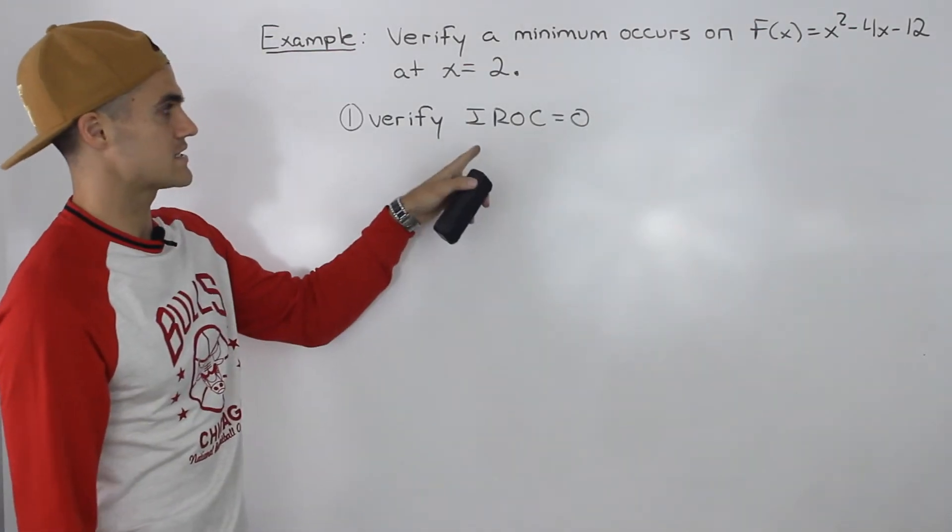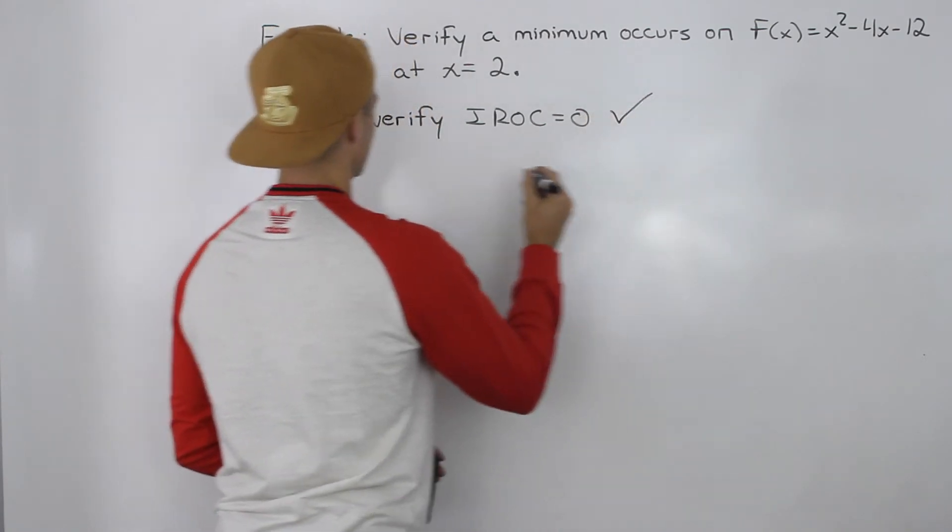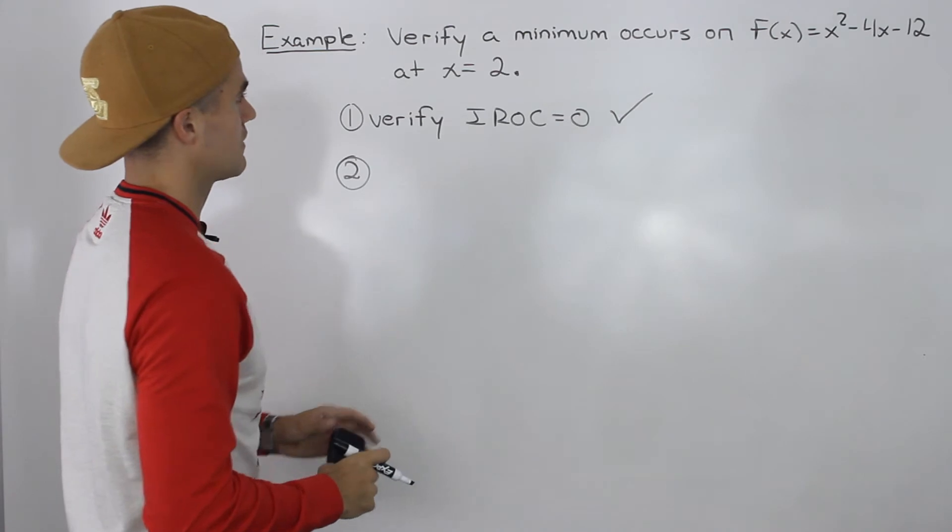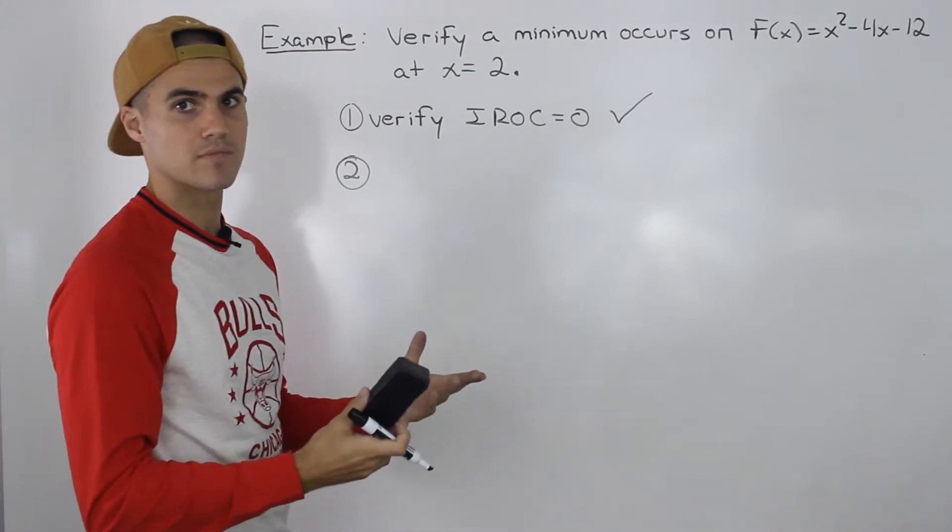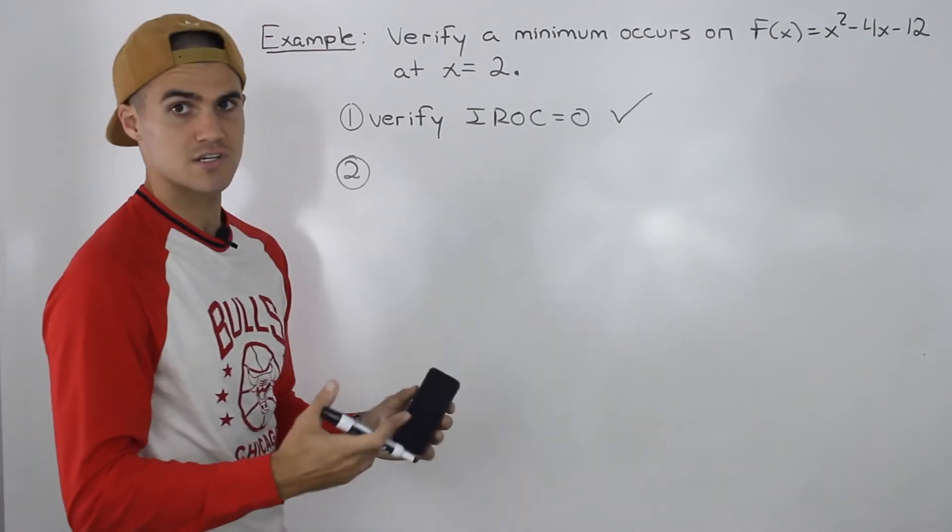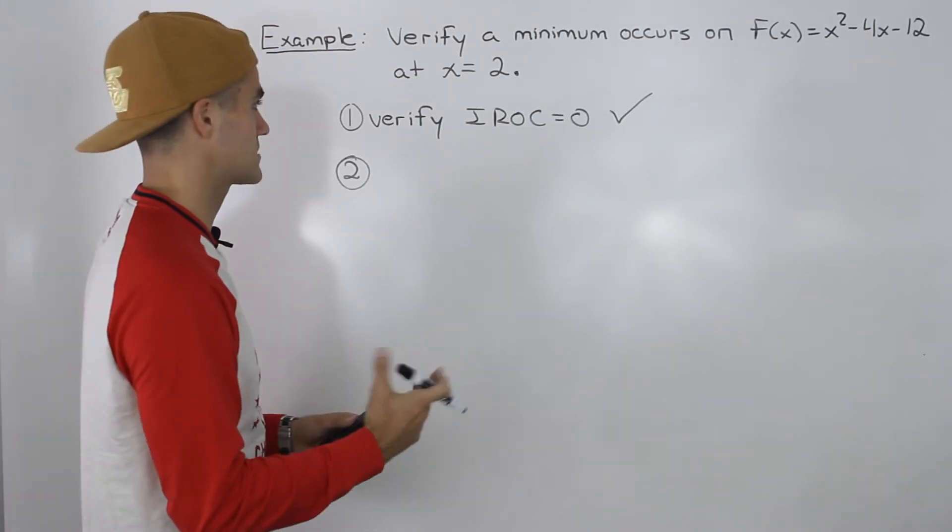So step one, verify instantaneous rate of change equals 0. That is complete. So what's step two now? We have to verify that it's a minimum that's occurring, because from step one we verified instantaneous rate of change is 0, but we don't know whether that's a minimum or a maximum.